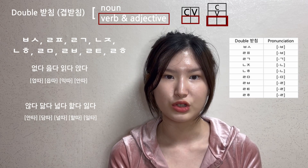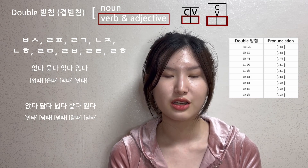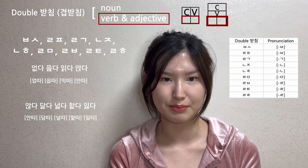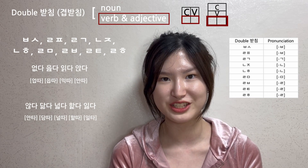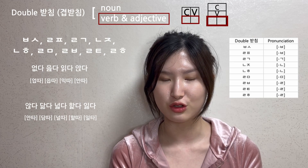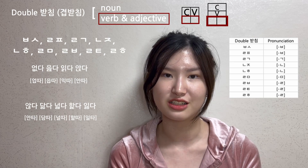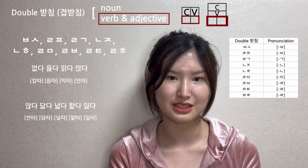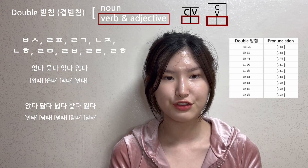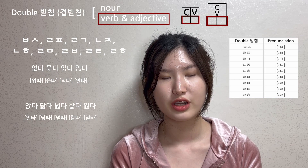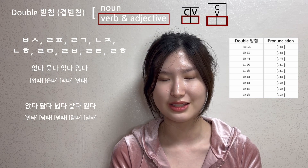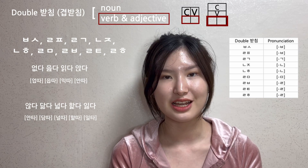When there comes a vowel after the double patchim, linking — called yarnum — happens, so we pronounce every consonant in the double patchim. I'll cover this in the yarnum video in detail. I hope that this was helpful!